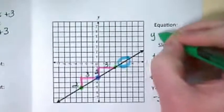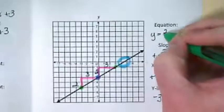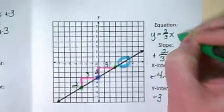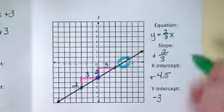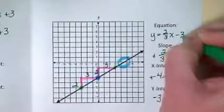That means our equation is y equals 2 thirds x. Our y-intercept is... so we finish it off with minus 3.